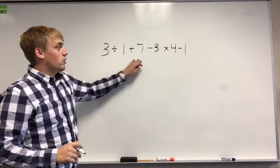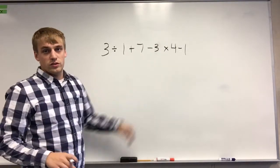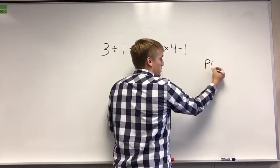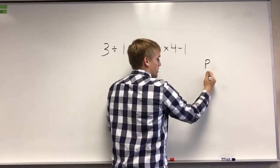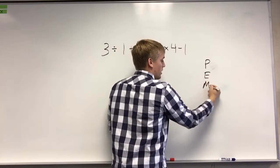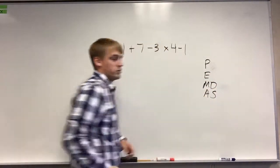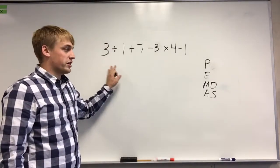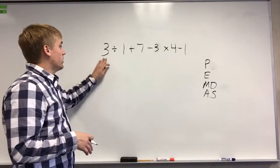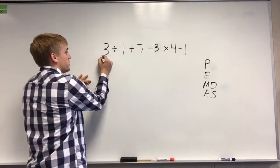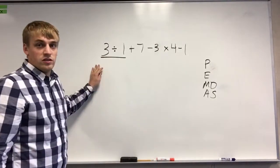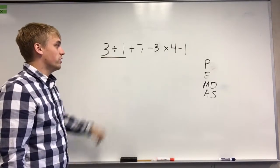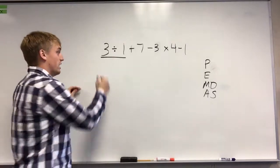This problem has multiple operations in it, so we're going to go through it. Remember PEMDAS: parentheses, exponents, multiply or divide, add or subtract. There are no parentheses and there are no exponents, so we're going to multiply or divide. The first thing I see is division. What I do is just underline the numbers that go with the operation — so 3 divided by 1. 3 divided by 1 equals 3.